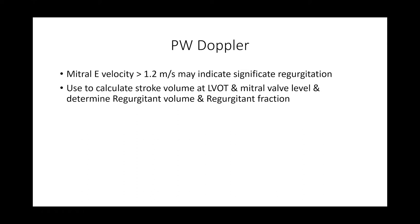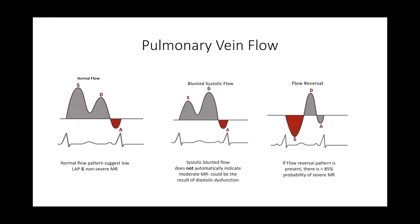With pulse wave Doppler, a few important things to measure: if the mitral E-wave velocity is more than 1.2 m/s, it may suggest significant regurgitation. You can measure left ventricular stroke volume at the LVOT and mitral annulus stroke volume to calculate all quantitative measures. Another important measurement by pulse wave Doppler is pulmonary vein flow.